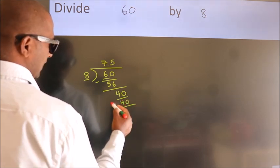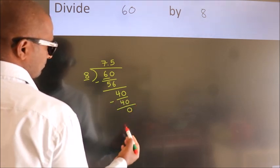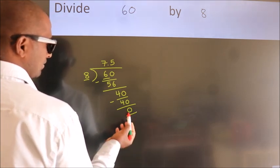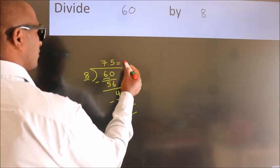Now we subtract and get 0. Here we got remainder 0, so this is our quotient. Thank you.